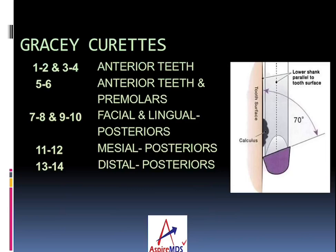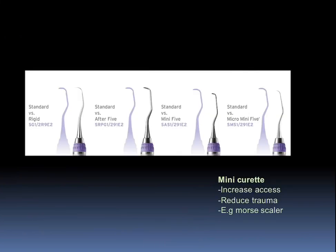These are the Gracey curettes: 1 and 2 for anterior teeth, 3 and 4 for anterior teeth, 5 and 6 for anterior teeth and premolars, 7, 8, 9, and 10 for facial and lingual surfaces of posteriors, 11 and 12 for mesial posteriors, and 13 and 14 for the distal surface of posteriors.